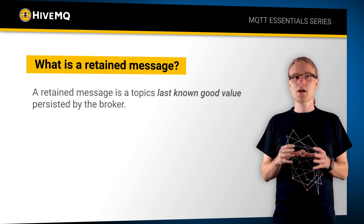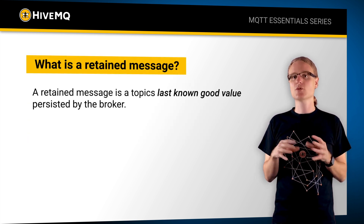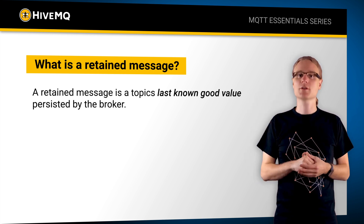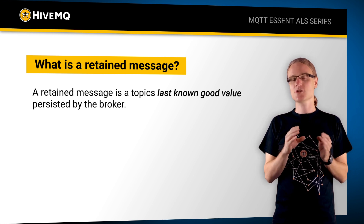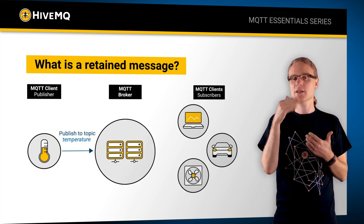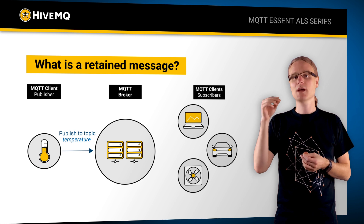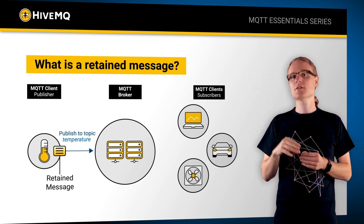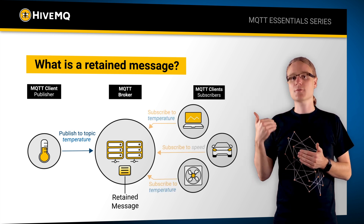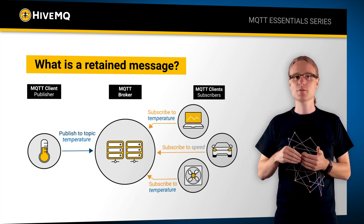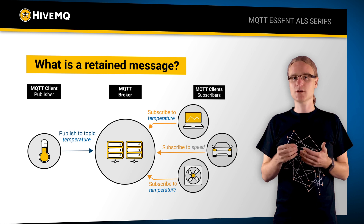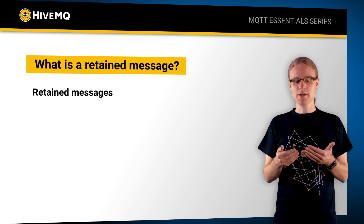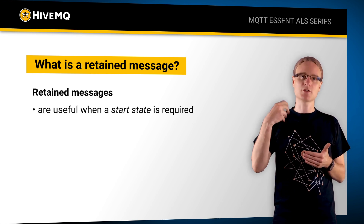What is a retained message? A retained message is a last known good value persisted by the broker for a topic. The last message sent by any client on a specific topic can be persisted on a broker, so new subscribers subscribing to this topic would get the freshest value available on the broker and they don't need to start with an empty value. This is especially useful if you have an application which requires a start state.